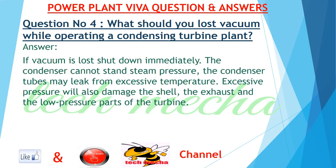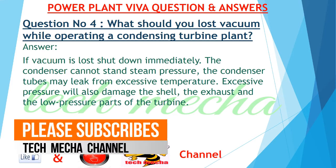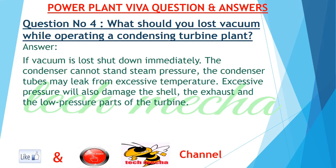Question number 4: What should you do if you lose vacuum while operating a condensing turbine plant? Answer: If vacuum is lost, shut down immediately. The condenser cannot stand steam pressure; the condenser tubes may leak from excessive temperature. Excessive pressure will also damage the shell, the exhaust, and the low pressure parts of the turbine.